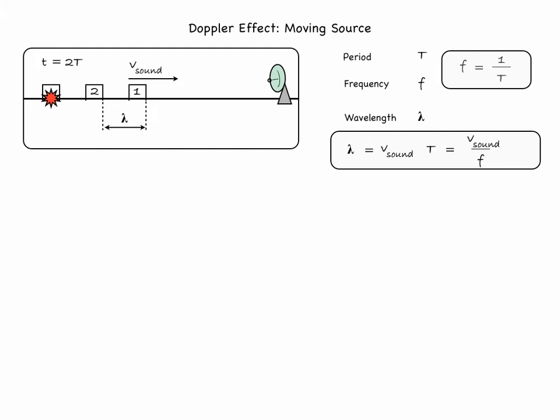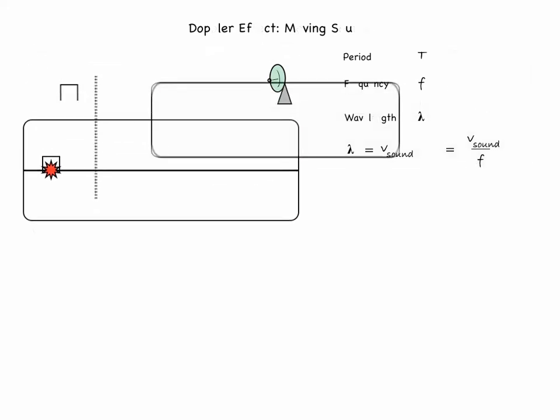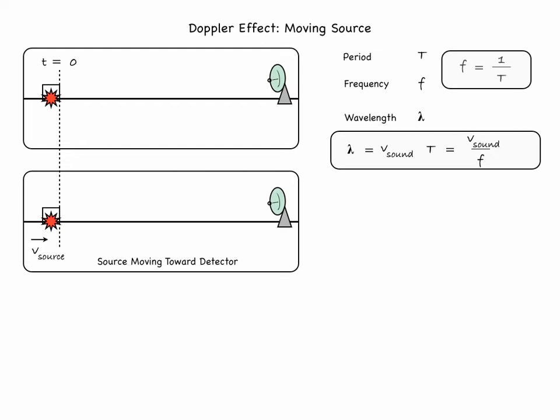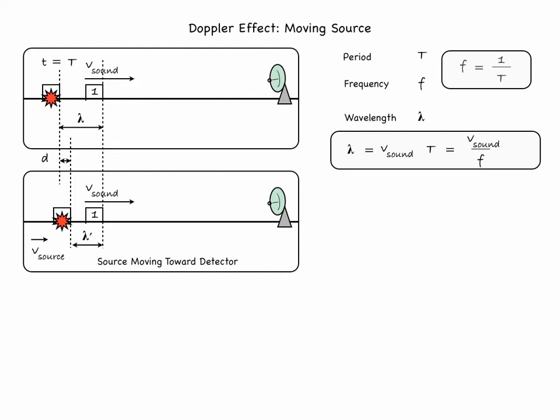Let's now look at what happens when the source is actually moving toward the detector with velocity v source. The top diagram shows what happens when the source is stationary, and the bottom diagram shows the bleeps as the source moves toward the detector with velocity v source. We begin with the first bleep at time equals zero. At time equals t, the source is about to emit a second bleep, but now it has moved to a different location, a little bit closer to the detector. So the spacing lambda prime is actually smaller than when the source was stationary.